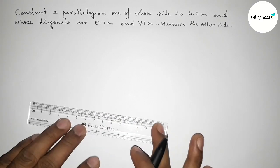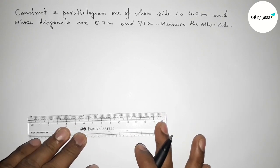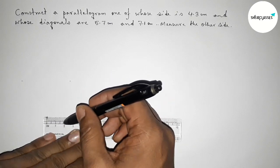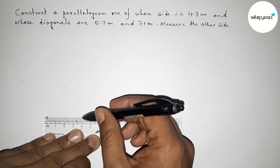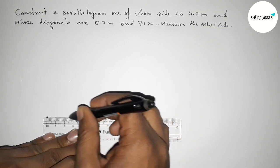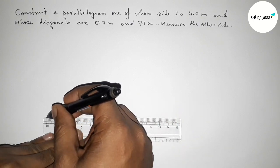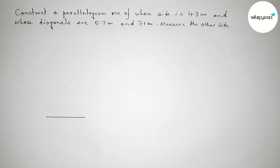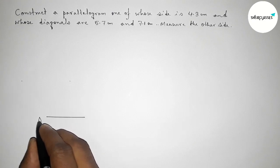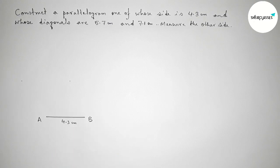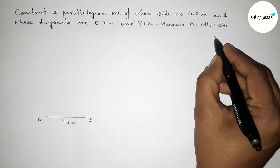First, with the help of a scale, I am going to draw the given side of 4.3 centimeters. This is starting 0, 1, 2, 3, 4 and this is 4.1, 2, 3 — so this is a 4.3 centimeter line segment. Now taking here point A and here point B, so AB is a 4.3 centimeter line segment.